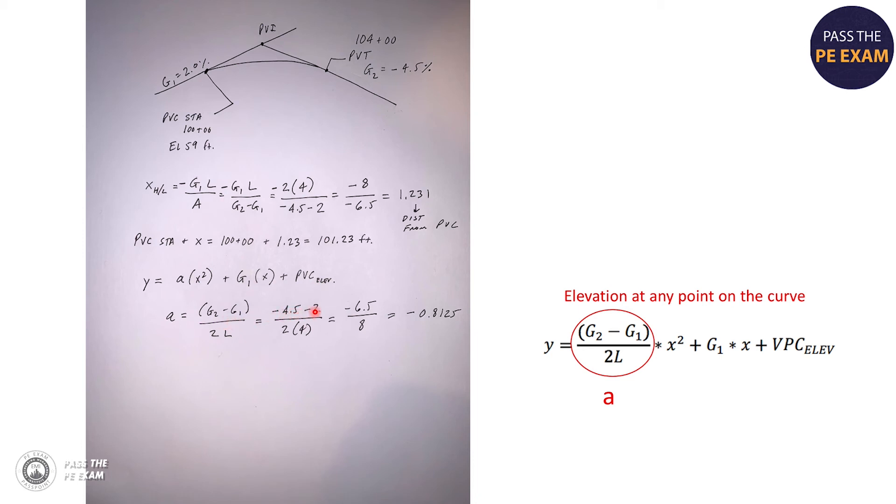So here it is G2 minus G1, which is minus 4.5 minus a 2, becomes a larger number, minus 6.5. And then 2L, which is 2 times 4, which equals 8, which yields an A value of negative 0.8125.